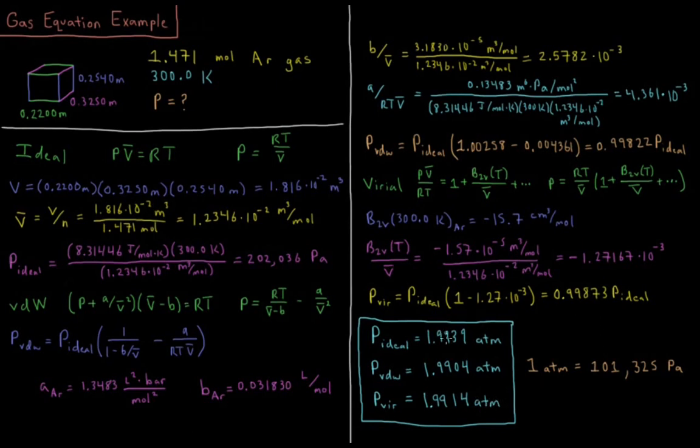Notice in each case, the ideal gas law overestimates the pressure by a little bit, by about 0.2%, but the virial equation and Van der Waals equations at these pressures are in pretty good agreement. This is typical for gases that run 1 to 2 atmospheres. At 1 atmosphere, most gases are ideal within 1% error, so that's why we typically use the ideal gas equation. It's pretty good until the pressures get higher.